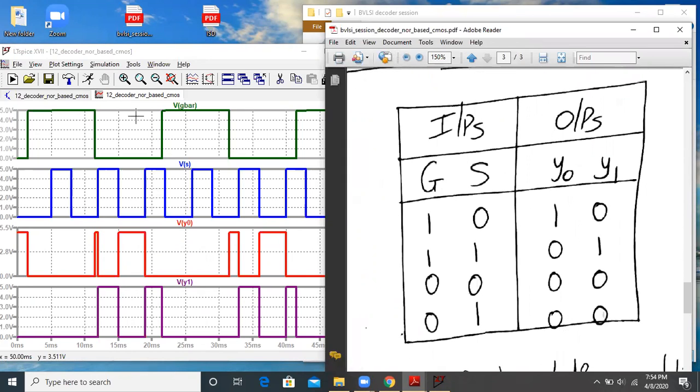So remember, here we are plotting G-bar and actually in the truth table, we have G. So opposite of G will be valid over here. So whenever we say G-bar is 0, here G means 1. So first case, G-bar is 0, that means G will be 1 over here. S is 0. So G is 1, S is 0, so my Y0 will be 1. So exactly Y0 is 1 and Y1 will be 0 as per the truth table.